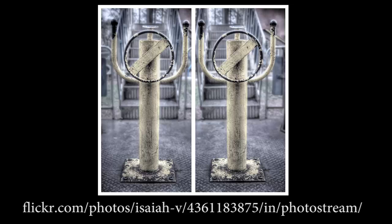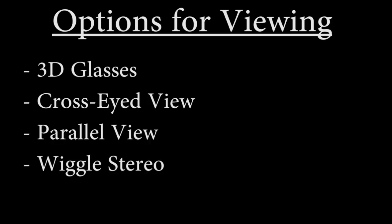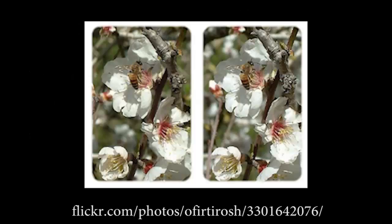The next viewing method is called parallel view. Instead of crossing your eyes, what you're actually going to do is look straight ahead so your eyes are focused out into the distance. It's kind of the opposite of cross-eyed view. The image in front of you is about a foot or so away, but your eyes are focused into the distance. You'll see three images once your eyes refocus, and the one in the middle is both images crossed over — that's the one that will be in 3D focus.